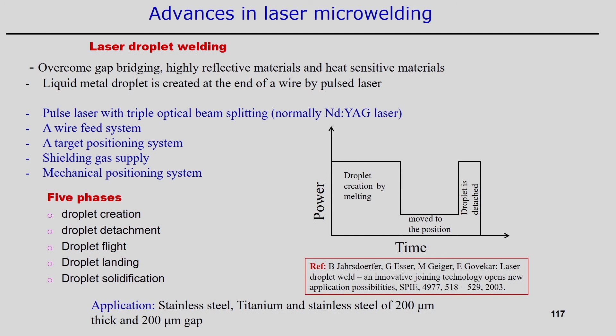These five phases are typical to the laser droplet welding process. The power versus time profile shows that during droplet creation by melting, power is highest; then as the droplet moves to position, power requirement is very low; then over a short span, power rises again for droplet detachment from the wire before it is transported to the target position. A typical application is joining stainless steel and titanium, with 2 micrometer thick sheets and 200 micrometer gap.